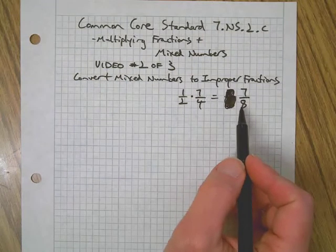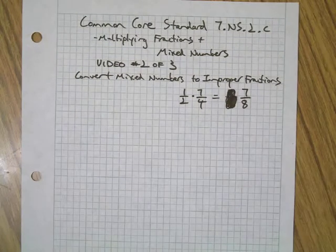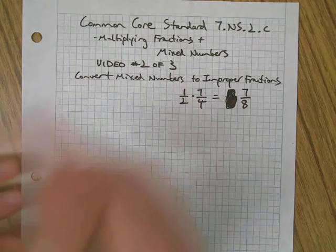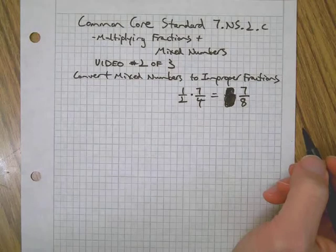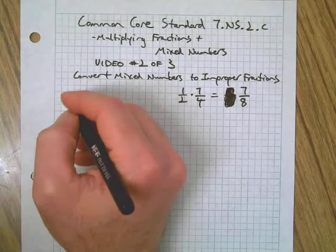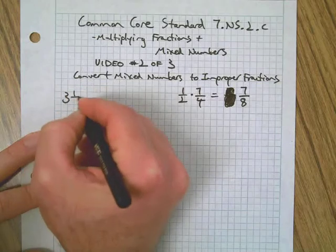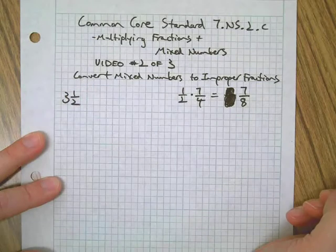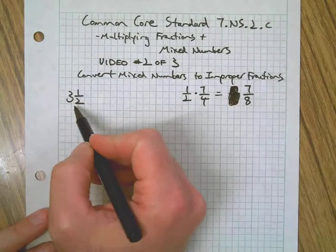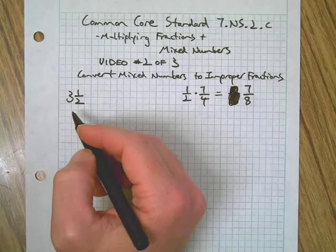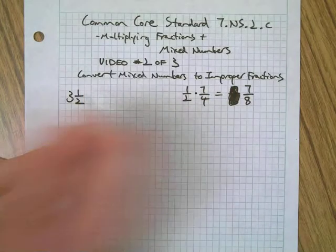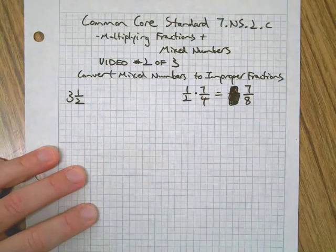Sometimes you'll get a problem that is a mixed number, and we need to know how to change a mixed number into an improper fraction. For example, if you get a mixed number like this and you know how to multiply improper fractions, this can cause you a problem. So we need to know how to change it.